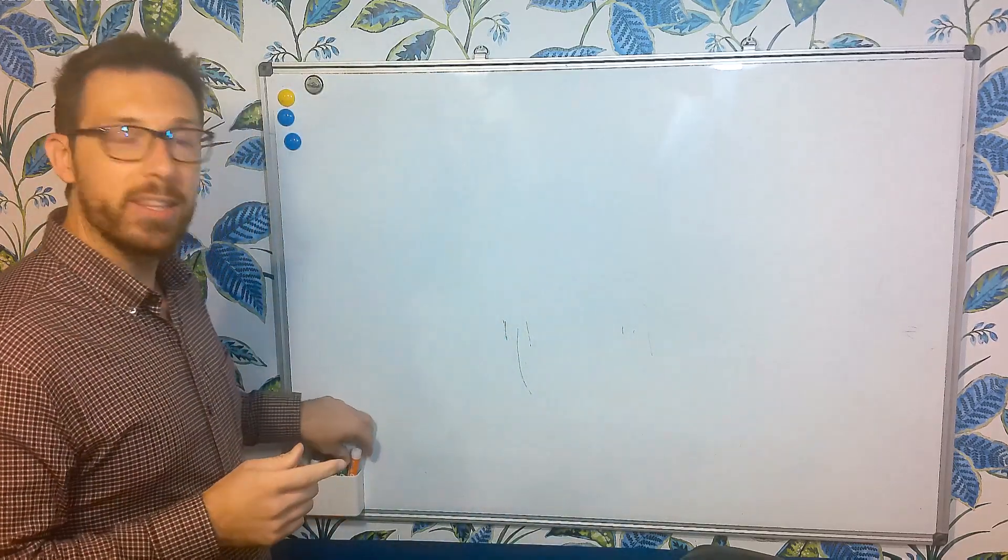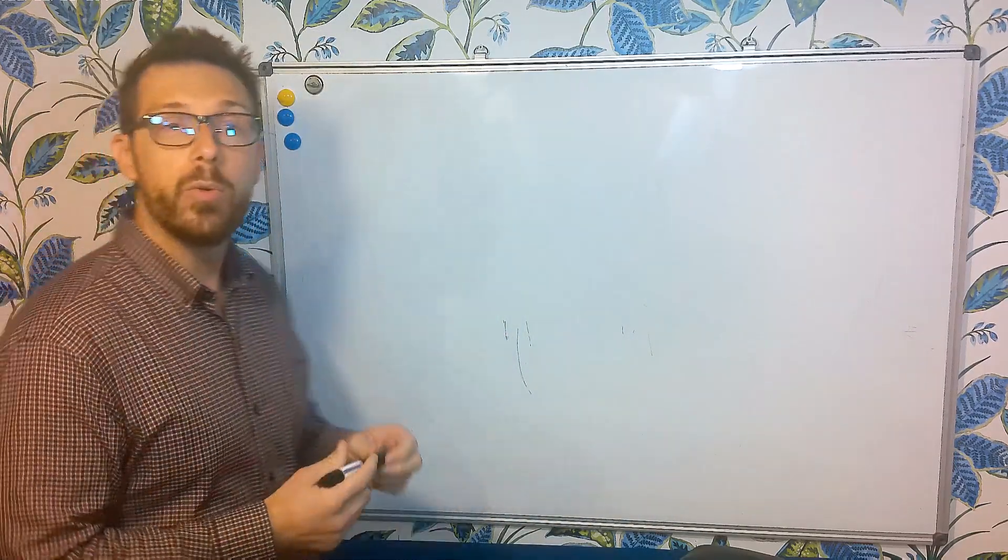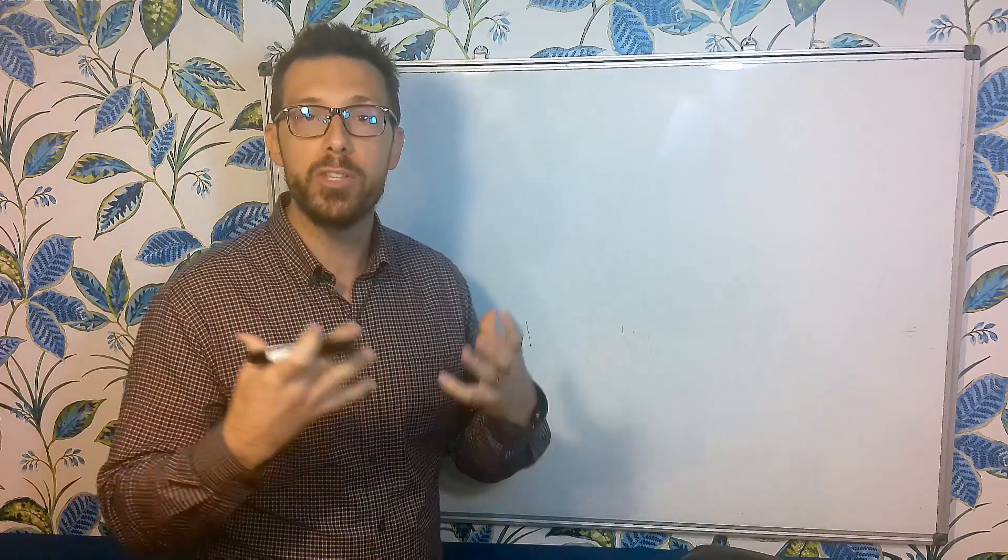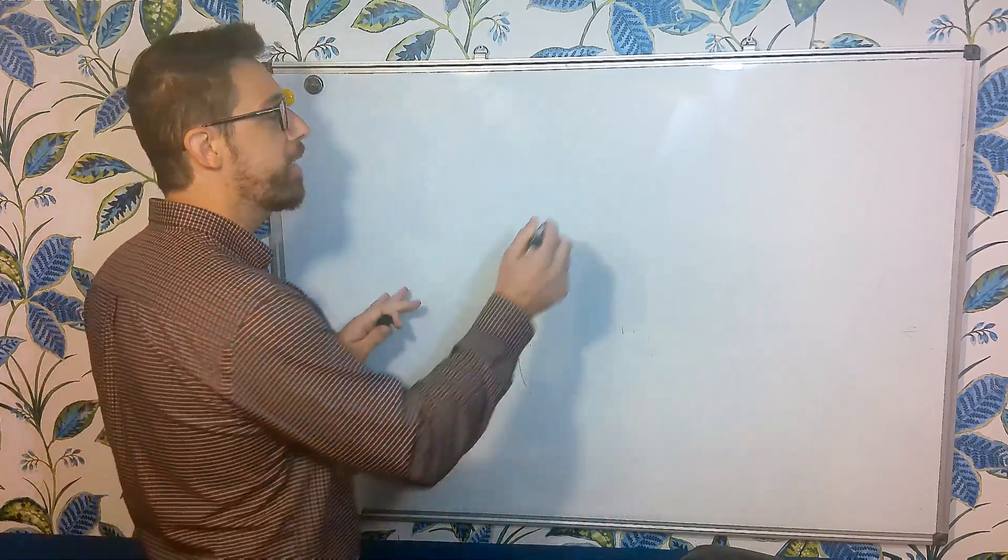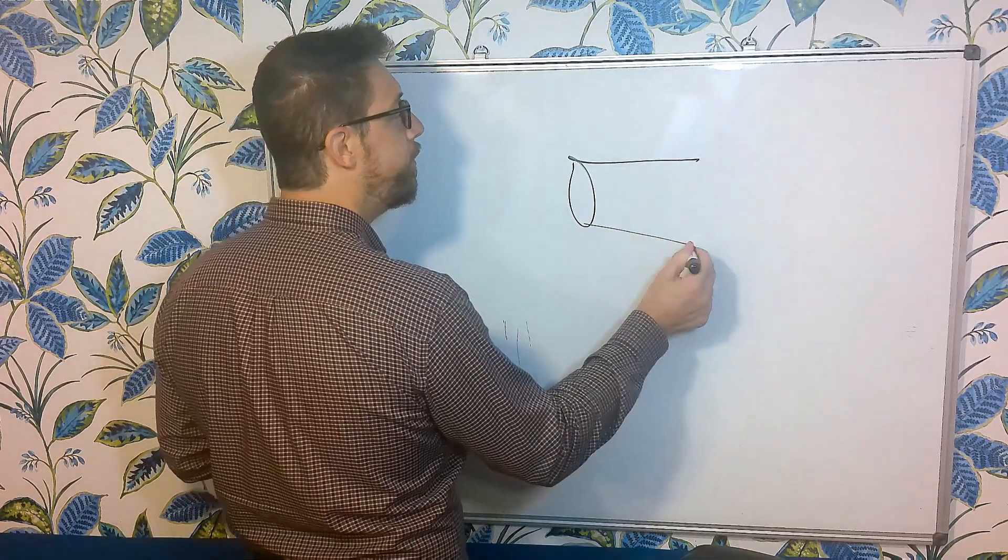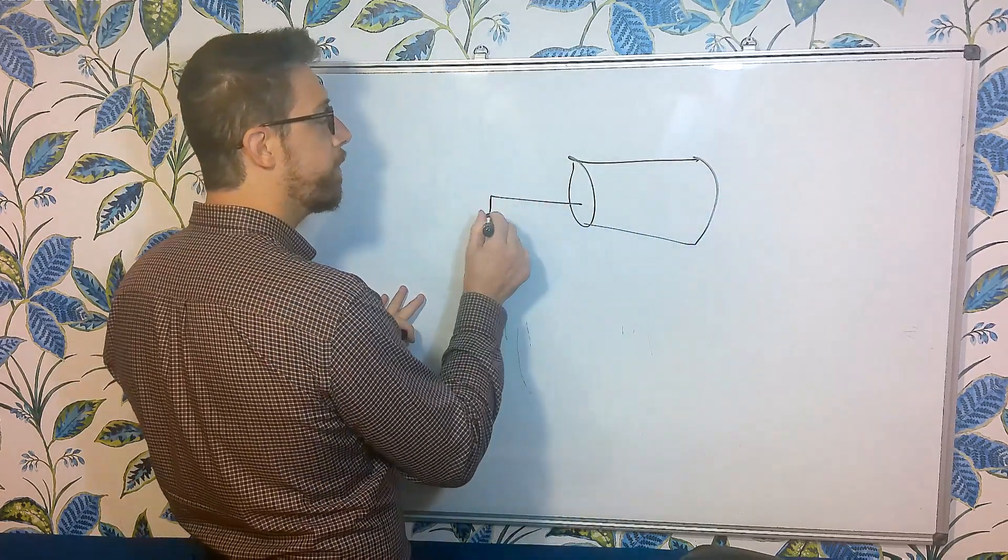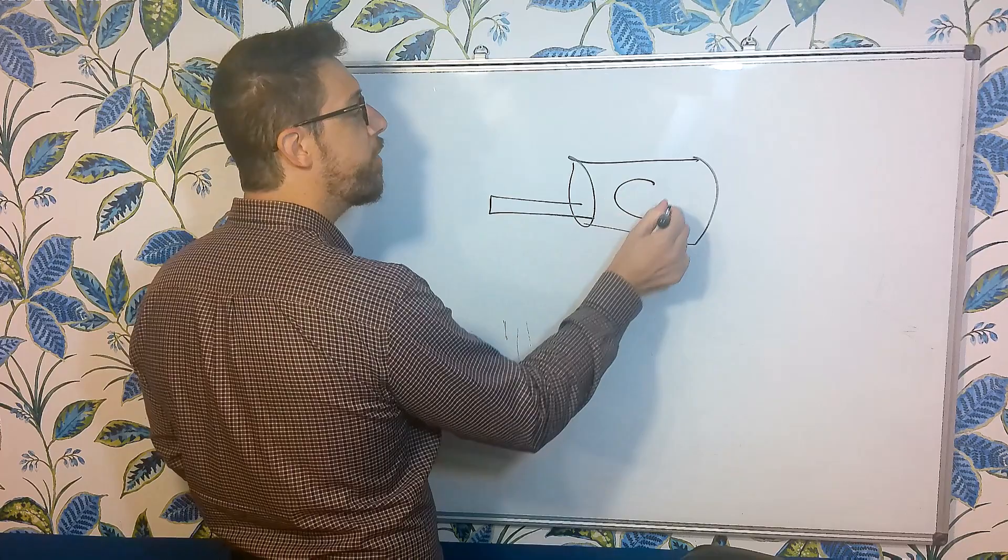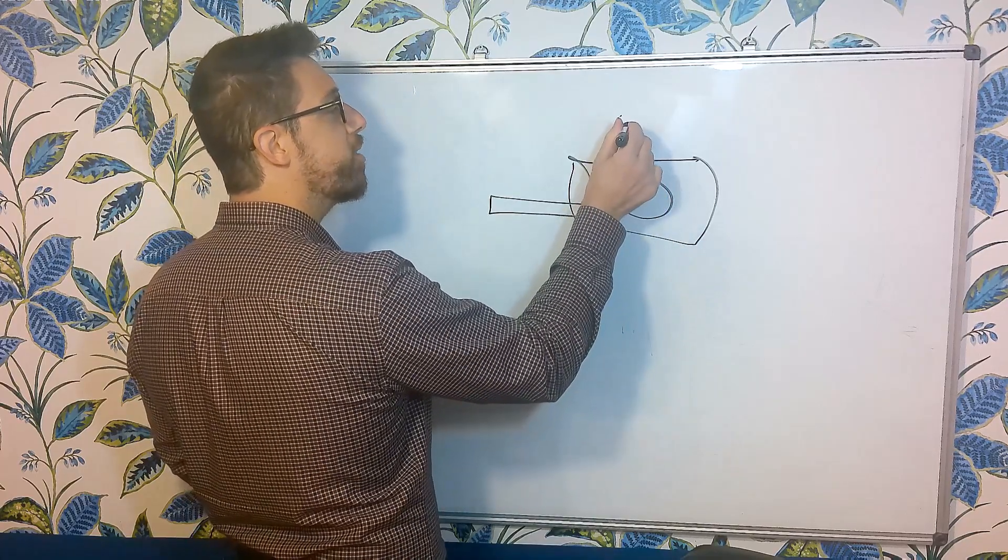So in order to understand this, we need to talk about this fringe field or this magnetic field that extends outside of our MRI unit. I'm going to draw an MRI unit and in the center of our unit we have something called isocenter.